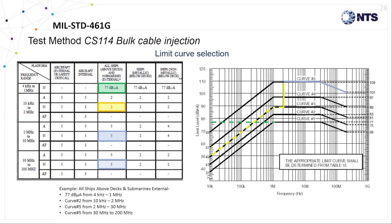In the highlighted example, you'll see that the Navy all Navy ships above decks and submarines for external platforms, the 10 kilohertz to 2 megahertz band utilizes curve 2 but increases to curve 5 from 2 meg to 200 meg, whereas the Navy ships below deck platform utilizes curve 2 across the entire test range.